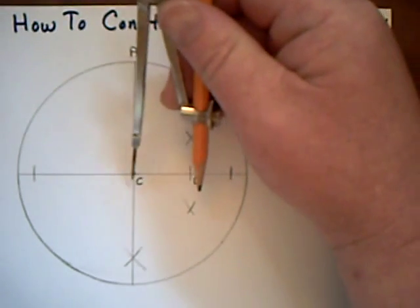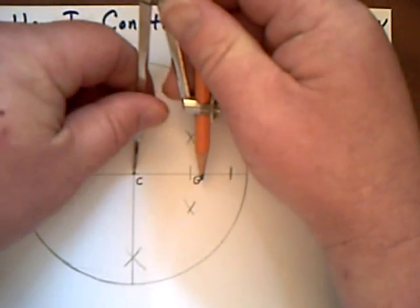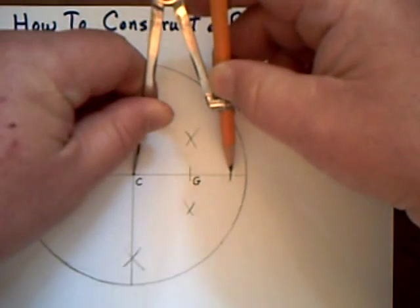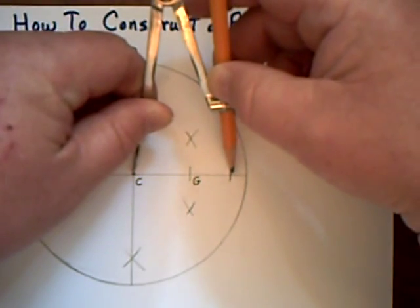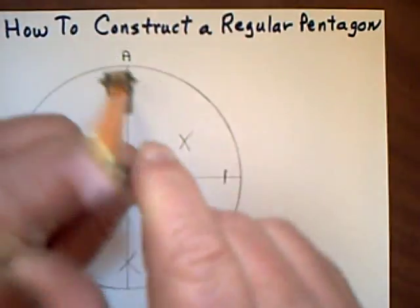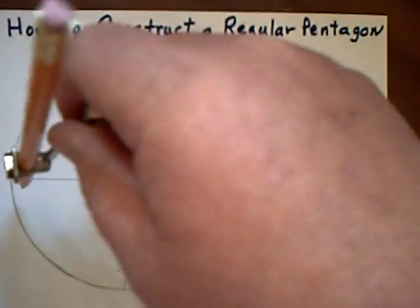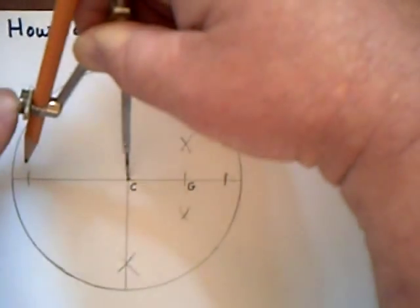Now I did that by putting my compass point at C, and moving the pencil out to there and making a mark, and then going to the other side, and with the same radius I made a mark over here.